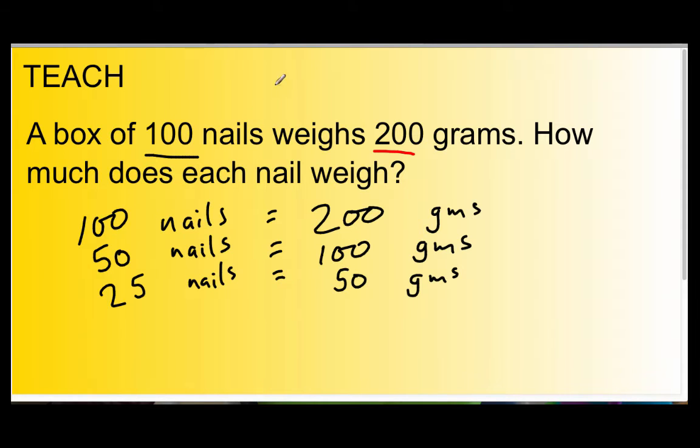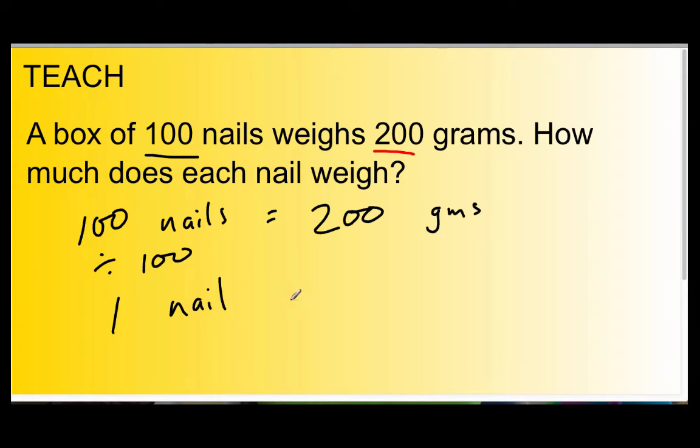Okay, but we can only go by halving so far. A much simpler way would be at the very outset just to do this. If we just divided 100 nails by 100, we would get 1 nail, wouldn't we? So, let's divide 100 nails by 100, which equals 1 nail. And let's divide 200 grams by 100 as well. Which, of course, equals 200 divided by 100 would equal 2, wouldn't it? And that would equal 2 grams.